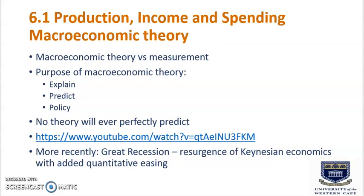Section 6.1: Production, Income and Spending. Macroeconomic theory versus measurement. There are three purposes of macroeconomic theory: the first is to explain the aggregate behavior of the economy; the second is to predict or forecast what may happen in the future; and the third is for government and policy makers to provide policies to compensate for market failures. However, there is no theory that will ever provide a perfect prediction.